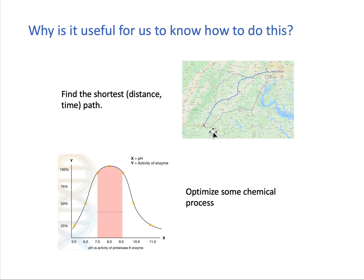A company like Coca-Cola delivering bottles from one city to another wants drivers to spend the least time on the road and use the least fuel. There are many applications for optimization. Another example: you might want to optimize a chemical process — say, the pH value of an enzyme versus its activity. There may be a particular pH where you get the maximum activity, and that is also an optimization problem.